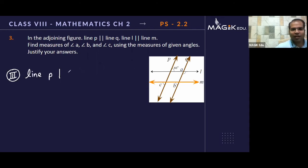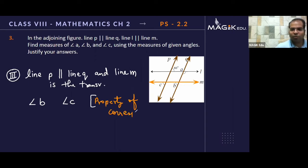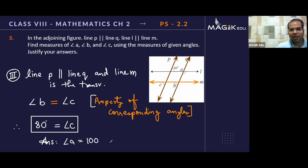Line p parallel to line q and line m is the transversal. Based on that, angle b and angle c have a relation. They are forming what is called property of corresponding angles. If they form corresponding angles, angle c equals angle b. That helps us finish the question. The final answer: angle a is 100 degrees, angle b is 80 degrees, angle c is 80 degrees.